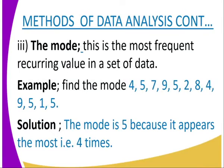Then we go to the mode. The mode is the most frequently recurring value in a set of data. For example, we have: 4, 5, 7, 9, 5, 2, 8, 4, 9, 5, 1, 5. If we look at the number five, it repeats four times — more than any other number. So it becomes the mode of the data.